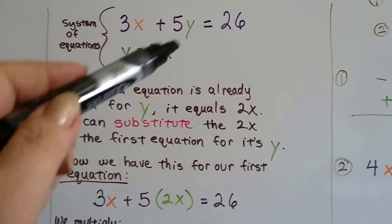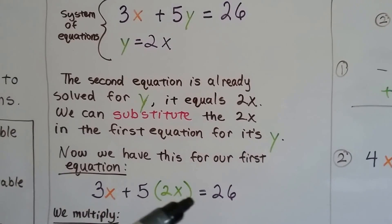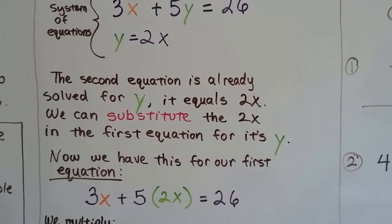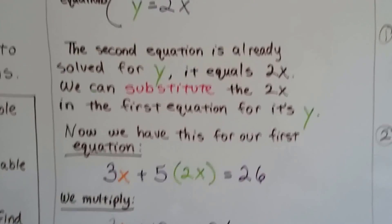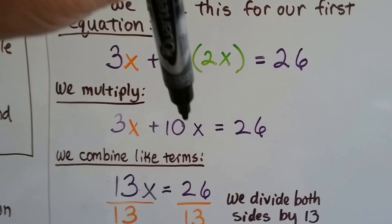Now we have this for our equation. So here was the y. We're going to put 2x in its place. We've got 3x plus 5 times 2x equals 26. We substituted that. So all we have to do is multiply. The 5 times 2x makes 10x.